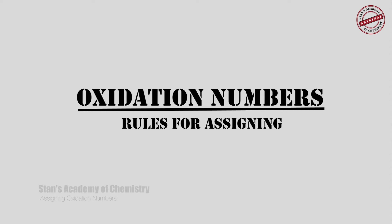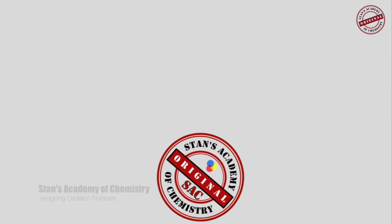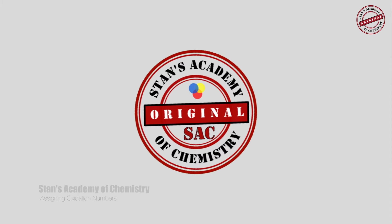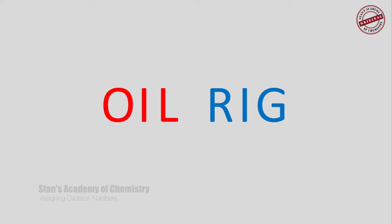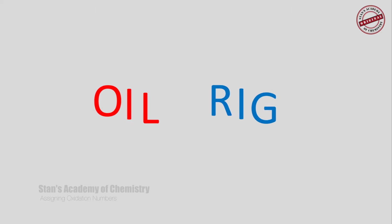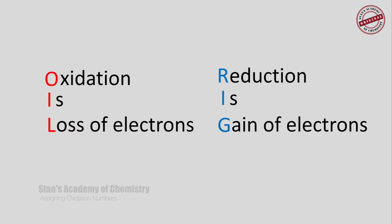Rules for Assigning Oxidation Numbers. In order to understand the concept of oxidation and reduction, we can use an acronym — OIL RIG — to relate to the process of oxidation and reduction. Oxidation is considered loss of electrons, and reduction is considered gain of electrons.